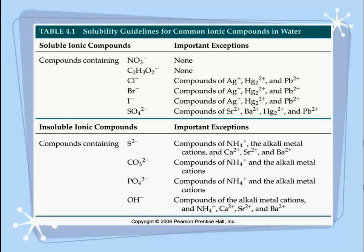Here's a list of common solubility rules. This is a qualitative approach to understanding what compounds will dissolve in water and which ones won't. This is found in your book, so you can access it at any time. Later on in the year we'll talk about specific numbers when it comes to solubility — how much actually dissolves. Right now we just want to know if we can identify the solids formed and which compounds will remain in aqueous form. On this table, the top half shows soluble ionic compounds with those anions on the left side, and on the right are the important exceptions.